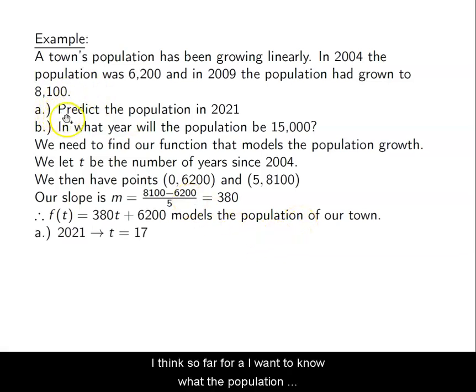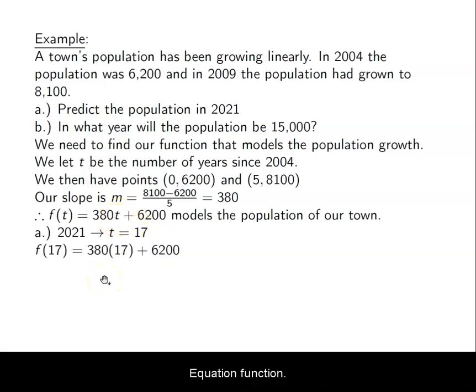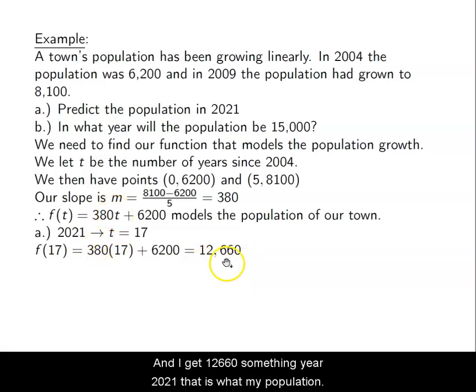So for part A, I want to know what the population is going to be in 2021. So 2021 compared to 2004 is 17 years later. So I let my T equal 17, and I plug it into my equation, my function. So everywhere I see T, I replace it with 17, and I get 12,660. So in the year 2021, that is what my population will be.